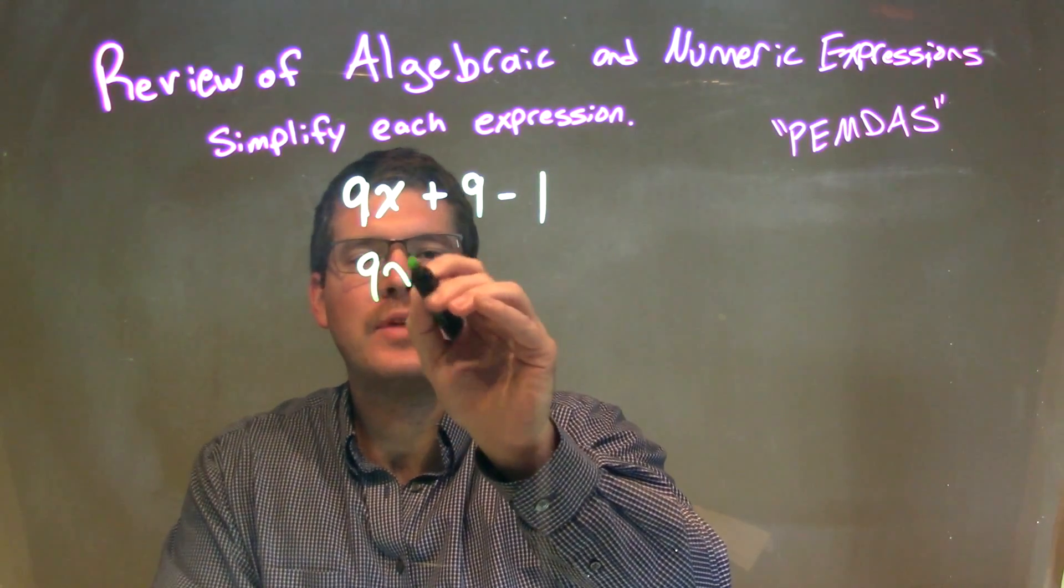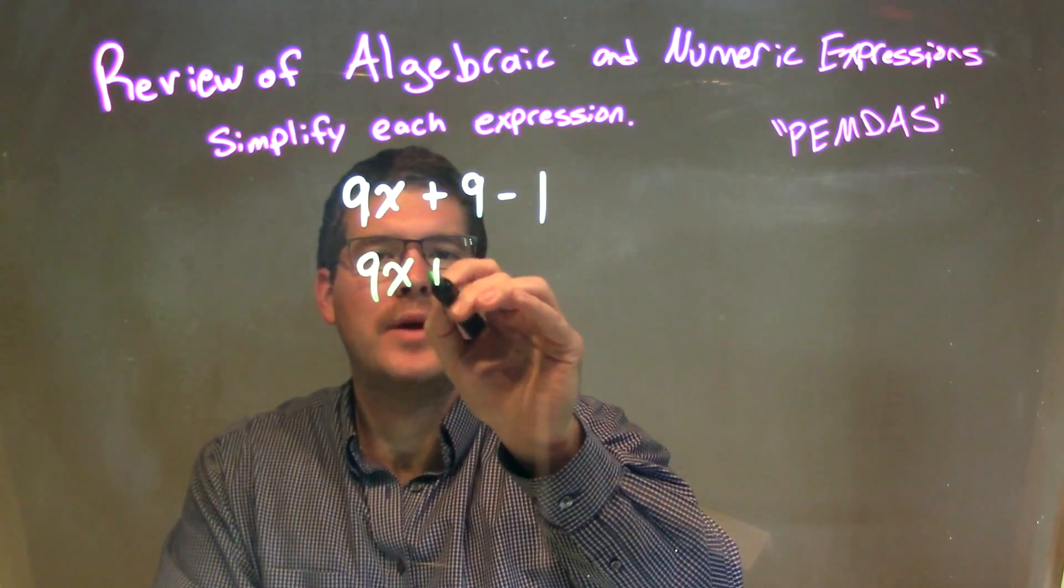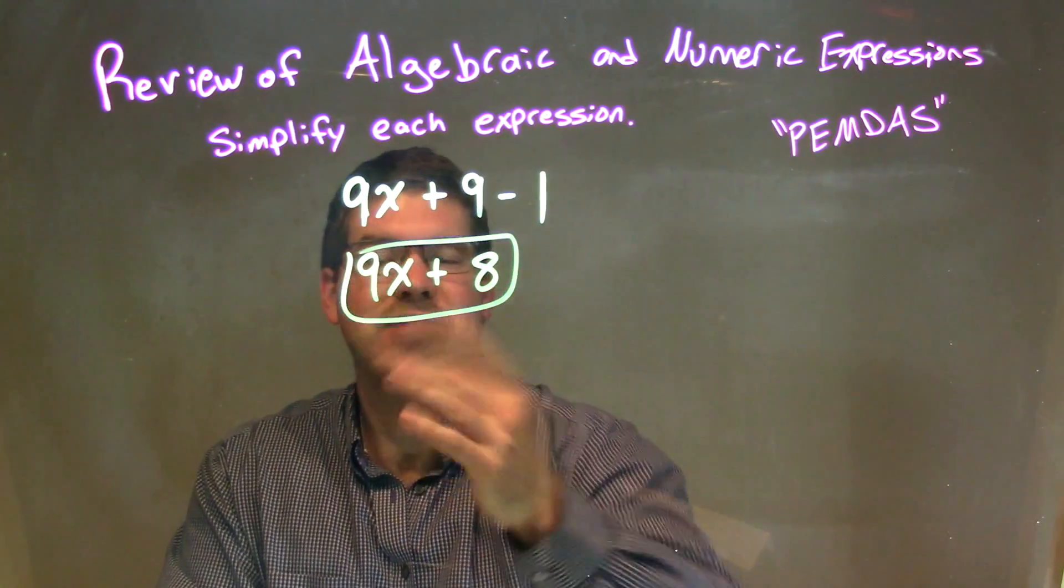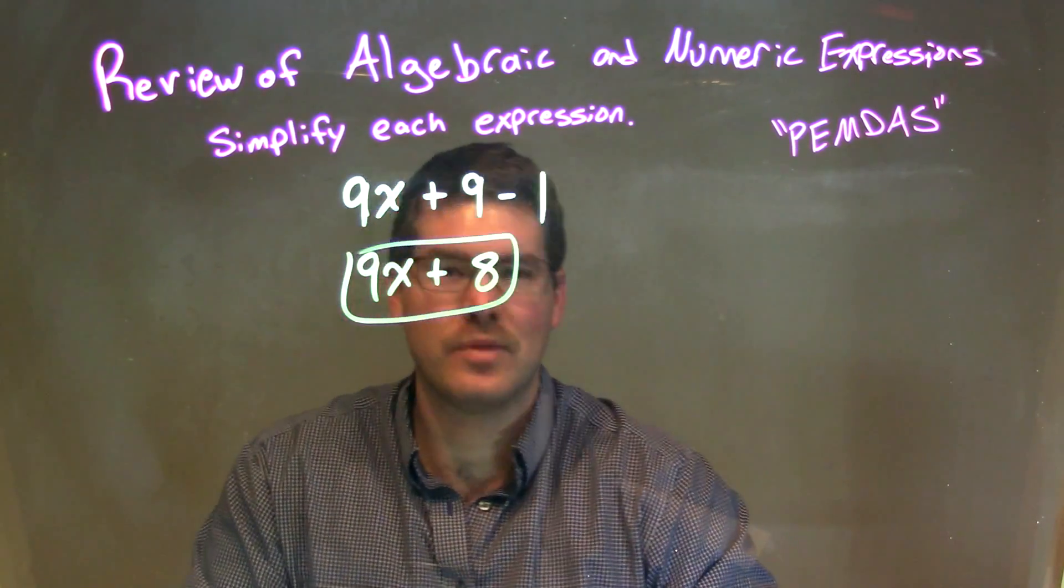So 9x comes down, and 9 minus 1 we combine together to get a positive 8. And so our final answer here is pretty simple: 9x plus 8.